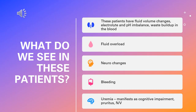What are we going to see with these patients? They have fluid volume changes, which throws their electrolytes and their pH out of balance. They have waste buildup in their blood, which is called uremia. This manifests as cognitive impairment, pruritus, which is itching, and nausea and vomiting. We see fluid overload, jugular vein distension, edema, bounding pulses, weight changes, and neuro changes — that's their cognitive impairment. They can have altered level of consciousness, confusion, and we can also see bleeding from these patients.